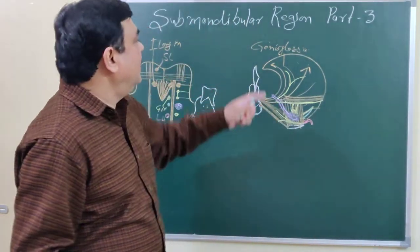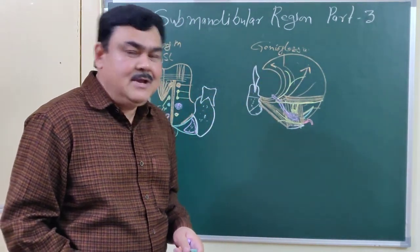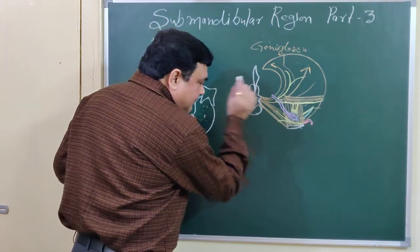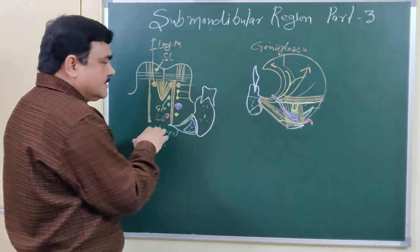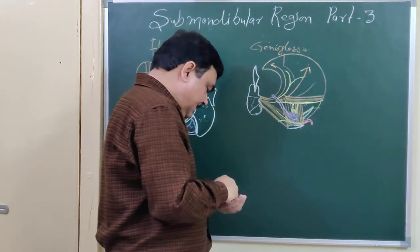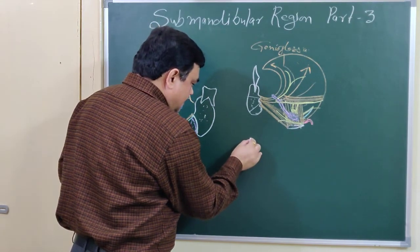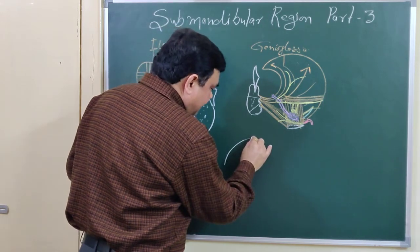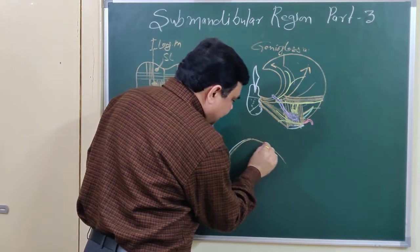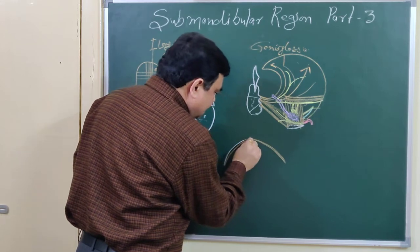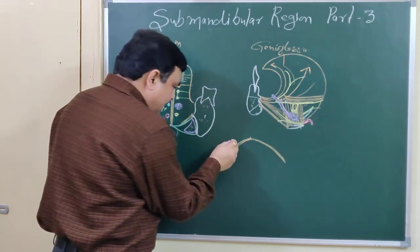We'll discuss the submandibular region part 3, focusing on the submandibular salivary gland. In a horizontal section at this level, you'll find the mylohyoid muscle on one side, the mylohyoid muscle on the other side, and the median raphe. This is the mylohyoid muscle, and here is the position of the gland.